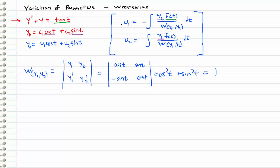So we have everything we need to evaluate these integrals now. u1 equals the negative integral of y2, which is sine t, times f(t), which is tangent t, all divided by the Wronskian, which is 1, dt. This is the same integral we encountered last time using a trig identity. This comes out to be negative natural log of secant t plus tangent t, plus sine t.